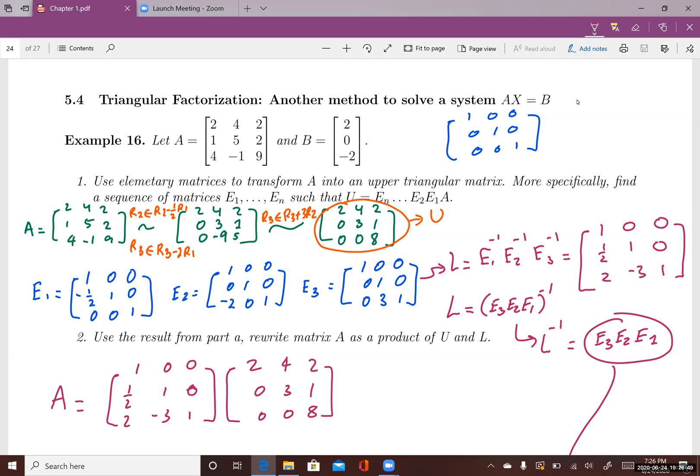First, I want to reduce A to an upper triangular matrix using row operations. There are three row operations that I need to apply onto A in order to get an upper triangular matrix, and I call it U.